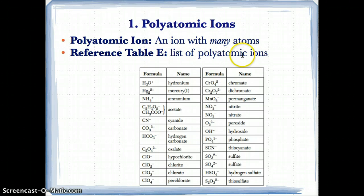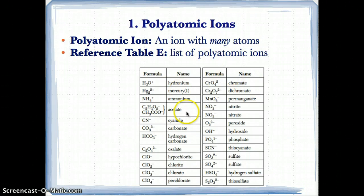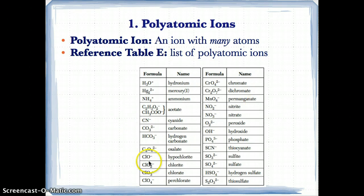Let's first talk about polyatomic ions. A polyatomic ion is an ion with many atoms — many atoms grouped together that have a collective charge. Where you can find this is on reference Table E, which lists polyatomic ions. For example, you have hydronium H3O+, NH4+ is ammonium, CN minus is cyanide, CO3 2 minus is carbonate, and so on. We'll be using Table E throughout the lesson.